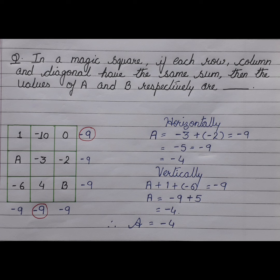Let us see the question. In a magic square, if each row, column and diagonal have the same sum, then the values of A and B respectively are.